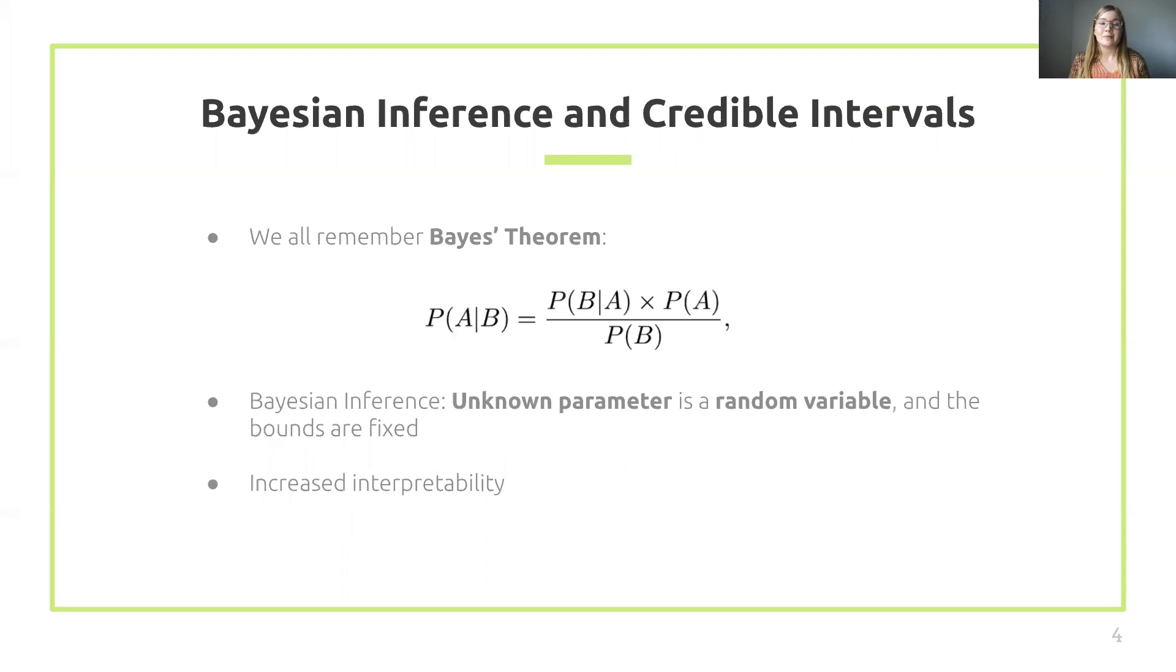Bayes' theorem and credible intervals offer us an alternative. Bayes' theorem, as we all remember, is this equation and Bayesian inference in general offers us two very important things. First, it allows us to incorporate prior knowledge and use prior beliefs about probability distributions in inference. It also has no qualms about assigning probabilities to the unknown parameter. This allows the interpretation of credible intervals to be much clearer.